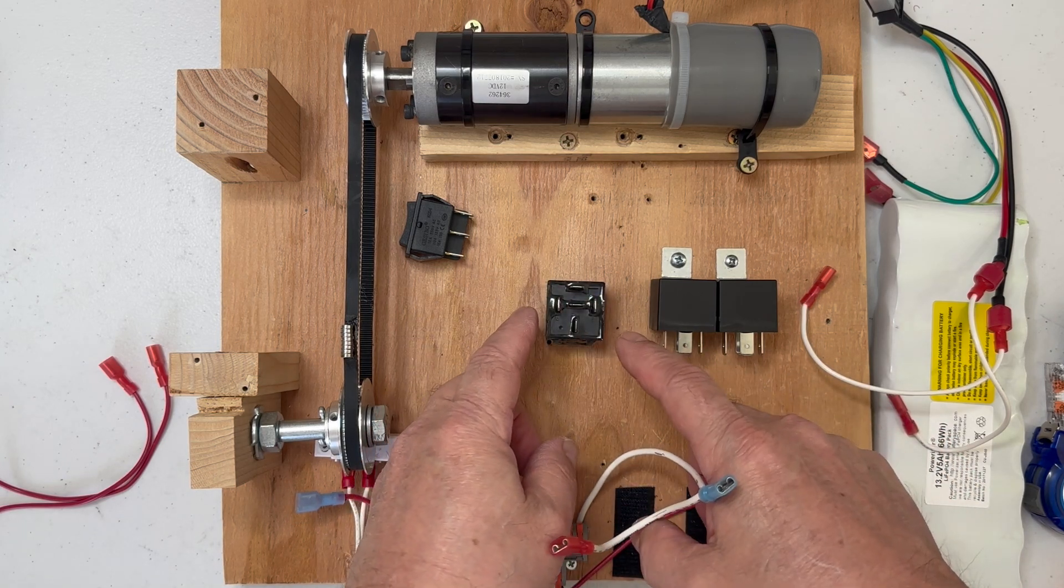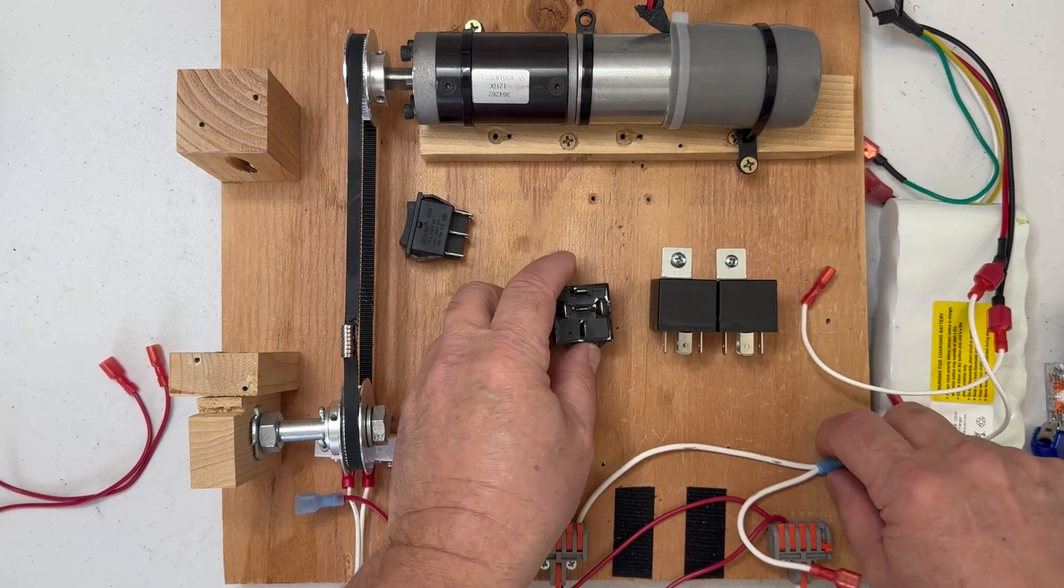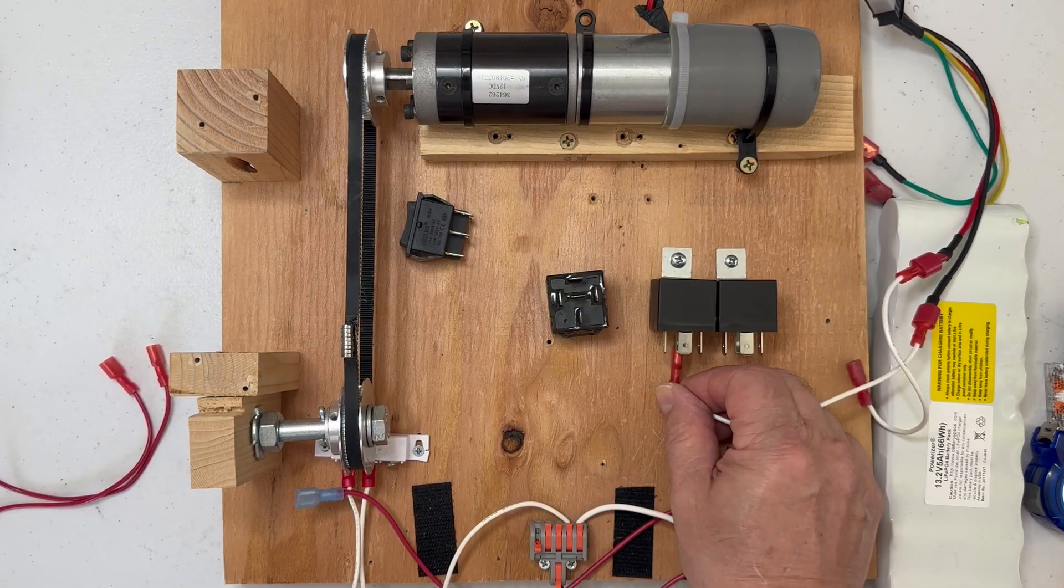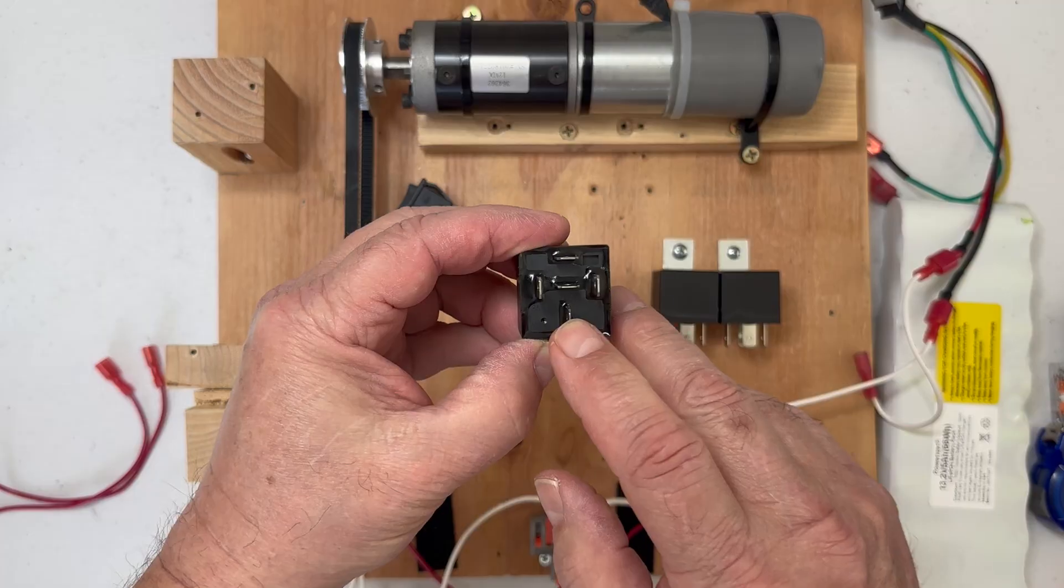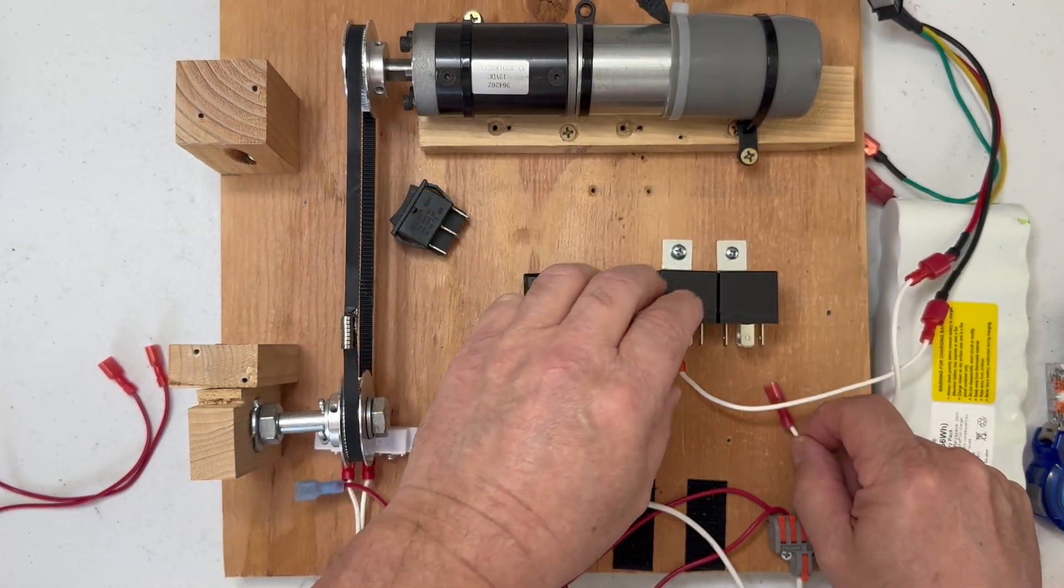This is for the coil, so when we apply power to the relay it's going to switch power through here. The first thing I want to do is hook up our motor and we're putting it on this post here, which you can see is 30. That's the common.